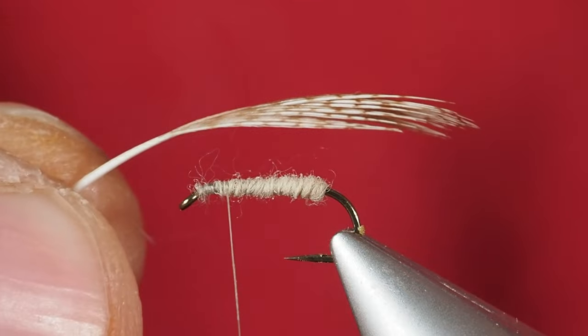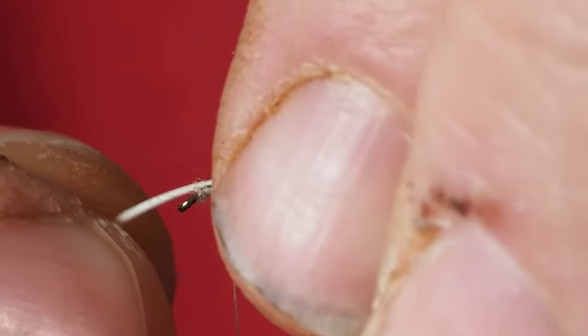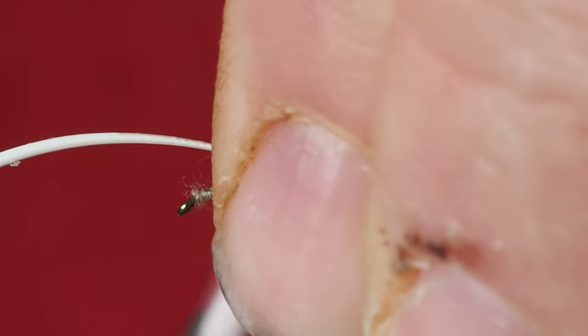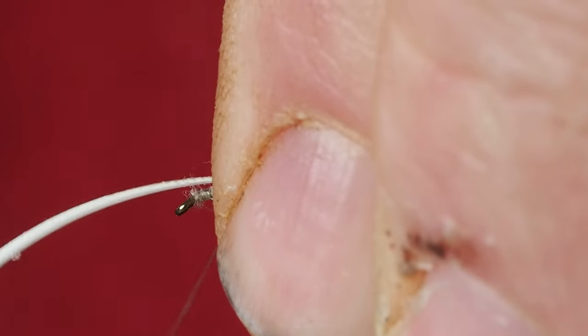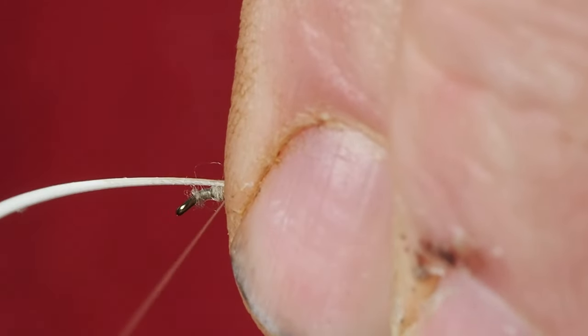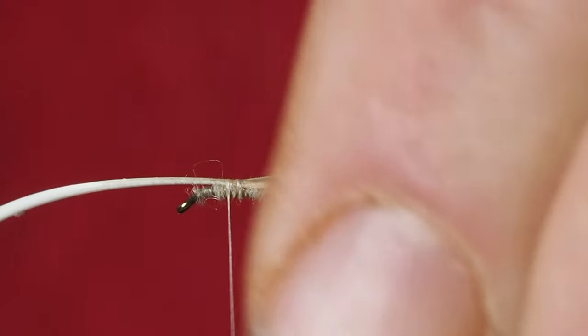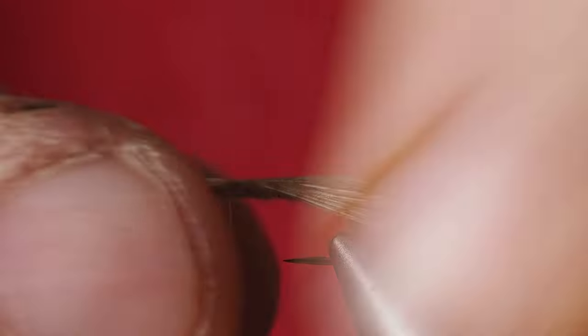I don't mind if this one gets looking a little junky because it is a spent, so it's in its dying phase. I'm going to just put that over the top of the shank of my hook here, and I'm going to just take a wrap or two to get that secured down where I want it on the top.